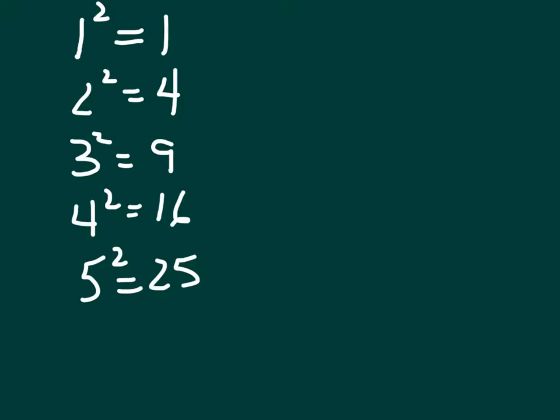When you can multiply a whole number times itself and get another number, then it is called a perfect square. So 1 is a perfect square, 4 is a perfect square, 9 is a perfect square, and 16 and 25 are perfect squares.